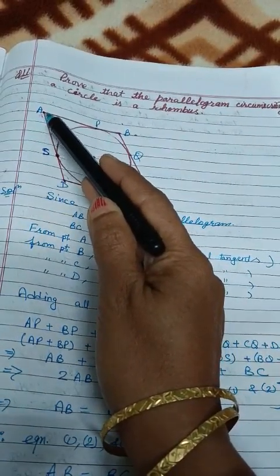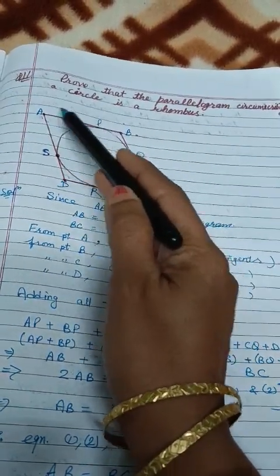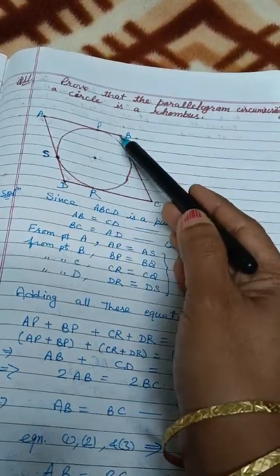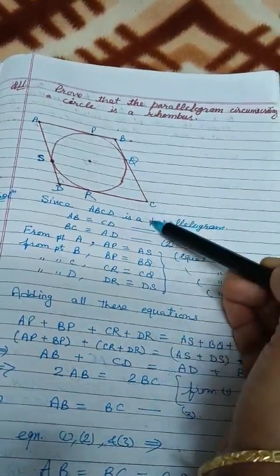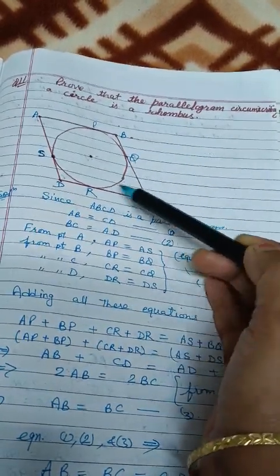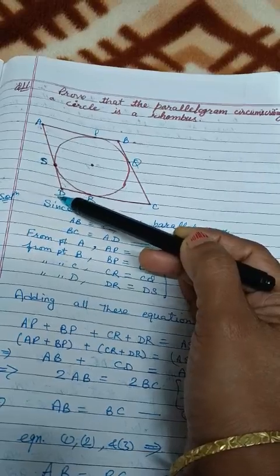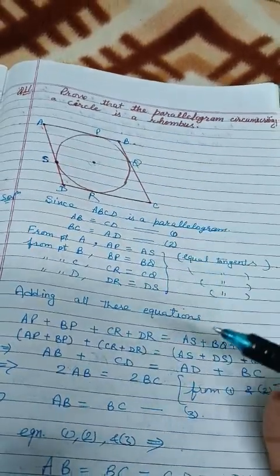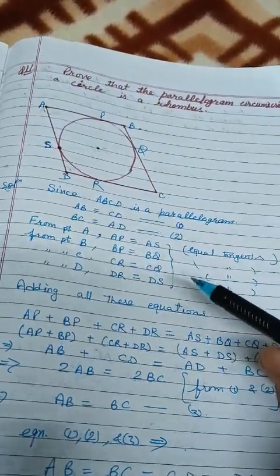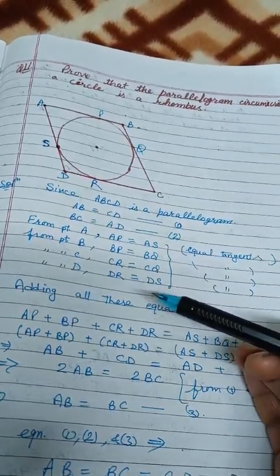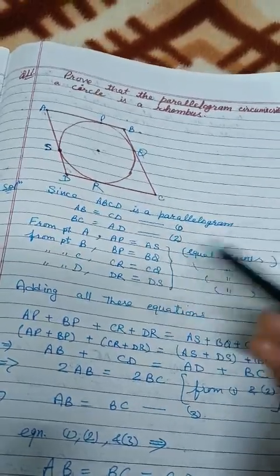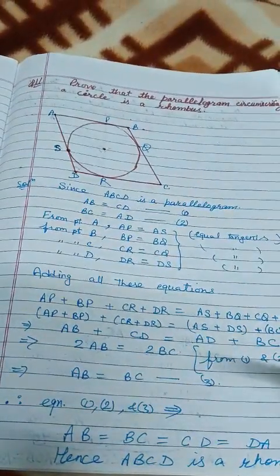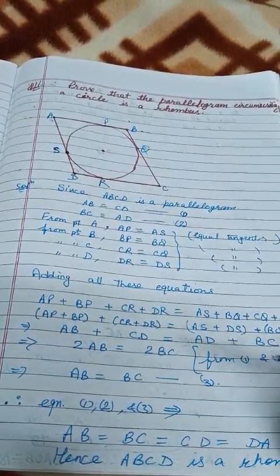Then, from point A — यह external point आगया circle का — यहां से जो two tangents हैं AP और AS, वो equal आजाएंगे। उसी तरह से point B से BP = BQ, point C से CQ = CR, और point D से DR = DS — क्योंकि external point से tangent draw की हैं, उनकी length equal रहती है।